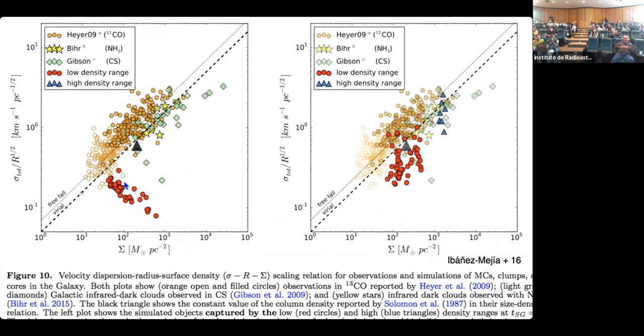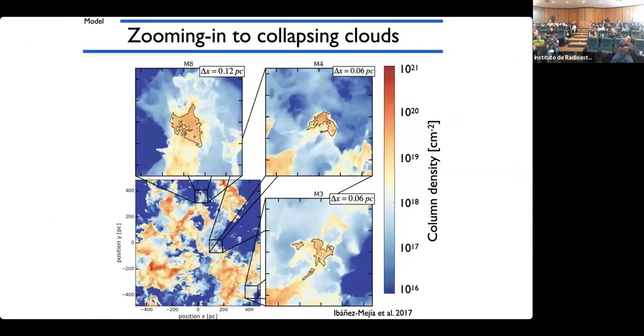We can look at this in the Heyer diagram. Prior to turning on self-gravity, this is what our clouds look like. This is what the observations look like. And this version of the Heyer diagram breaks down the clouds, so you can see CO, ammonia, and CS tracing increasingly high column densities. After we turn on self-gravity and allow the clouds to evolve, they join the Heyer diagram. Again, gravitationally dominated motions.